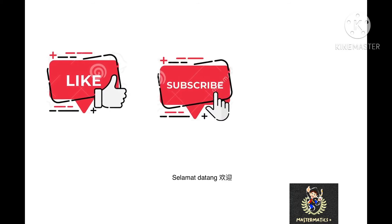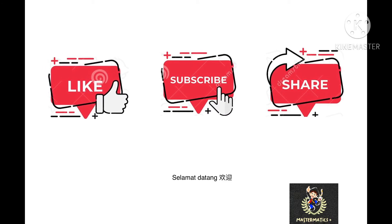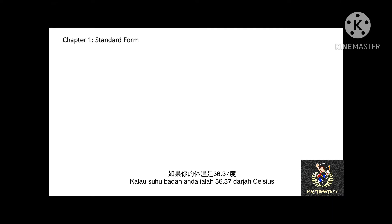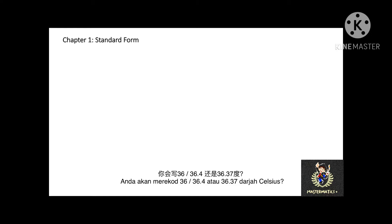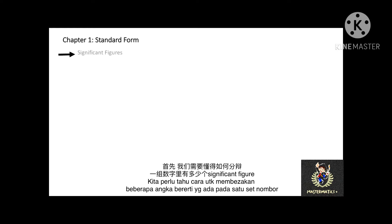Hello! Welcome to Mastermatic! Before we start this chapter, let me ask you a question. If your body temperature reading is 36.37, you will record your body temperature with how many significant figures — 36 degrees, 36.4, or 36.37 degrees Celsius? This is what we will learn in chapter one: significant figures.